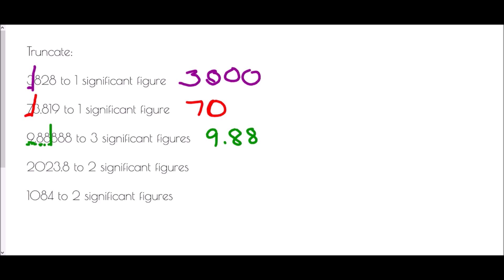For 2023.8 truncated to two significant figures, we count our significant figures: the 2 is our first, and the 0 after it is our second significant figure. We cut off at that point, so the digits in front remain as 20, and the ones after turn into zeros, giving us 2000. Finally, 1084 truncated to two significant figures: the first significant figure is 1, and the 0 must be significant as well because we already have a significant figure. So the two digits before the line remain as 10, and the rest turn into zeros, giving us 1000.